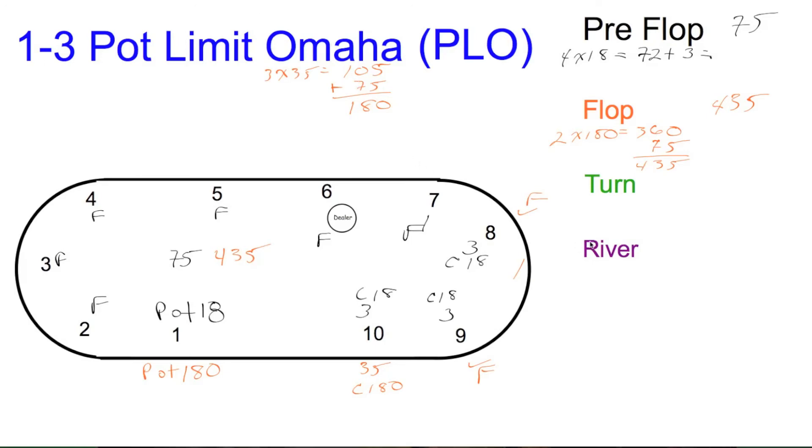Moving on to the turn. Seat 10 checks. Seat 1 bets, that's 250. Seat 10 is going to call the 250, so we have 500 coming in to 435. That's going to give us 935. Two players for 250 equals 500, and 500 plus 435 is 935.